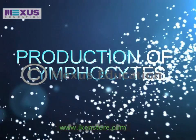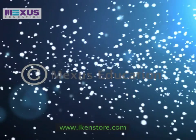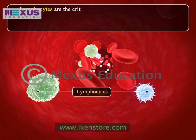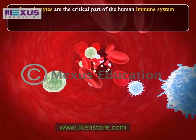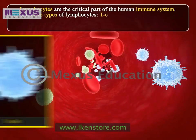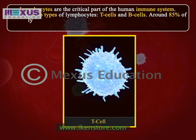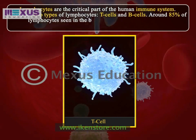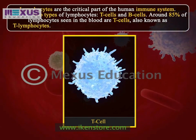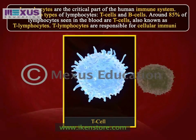Lymphocytes are a critical part of the human immune system. There are two types of lymphocytes: T cells and B cells. Around 85 percent of lymphocytes seen in the blood are T cells, also known as T lymphocytes. T lymphocytes are responsible for cellular immunity.